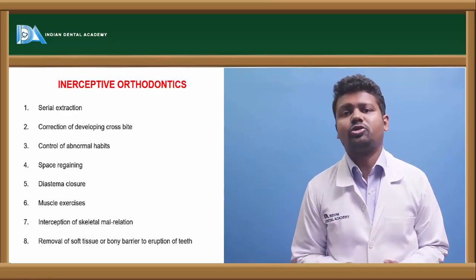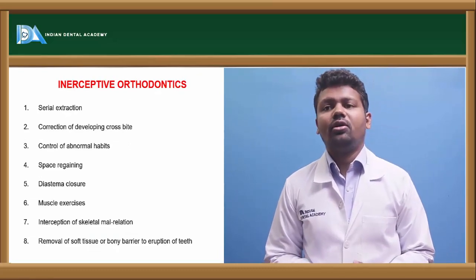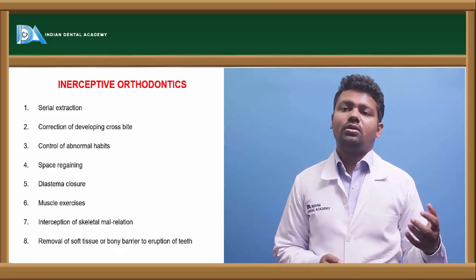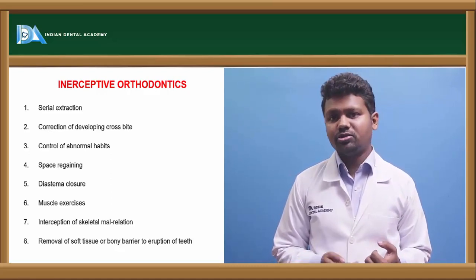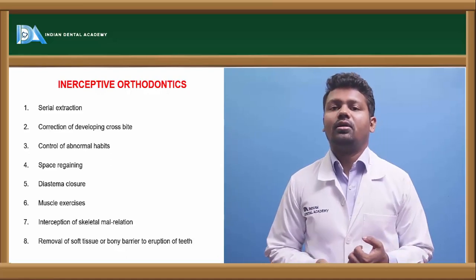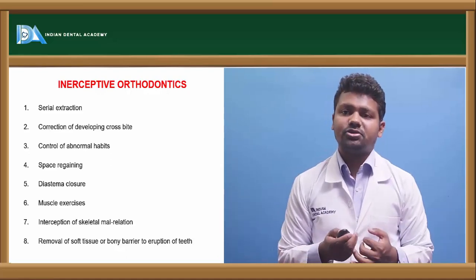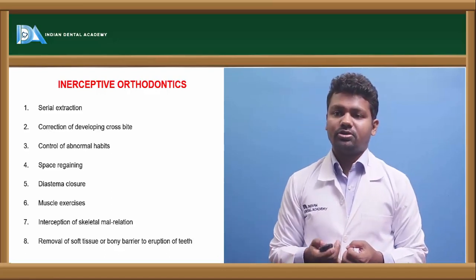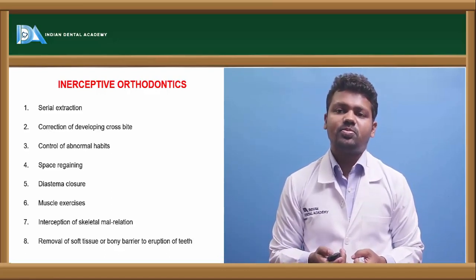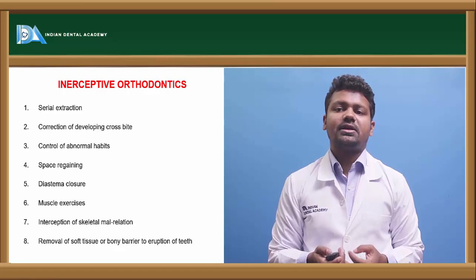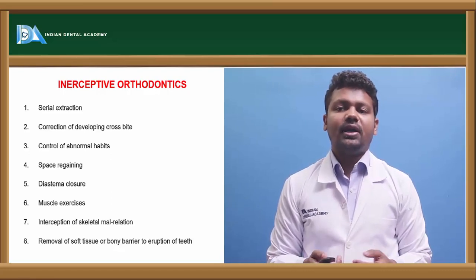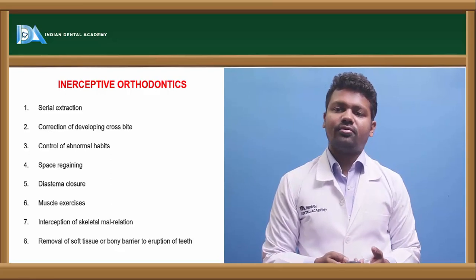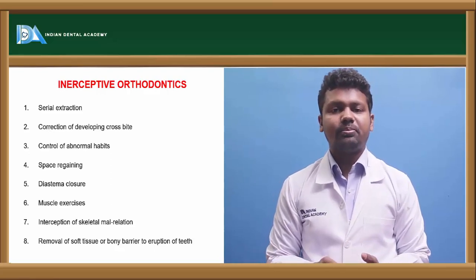Interceptive orthodontics — again, this is a short note topic. Interceptive procedures include serial extraction so that the permanent tooth will erupt in its normal position, correction of developing crossbite, control of abnormal habits, space regaining, diastema closure, muscle exercise, interception of skeletal malrelation, and removal of soft tissue or bone barriers to the eruption of teeth.